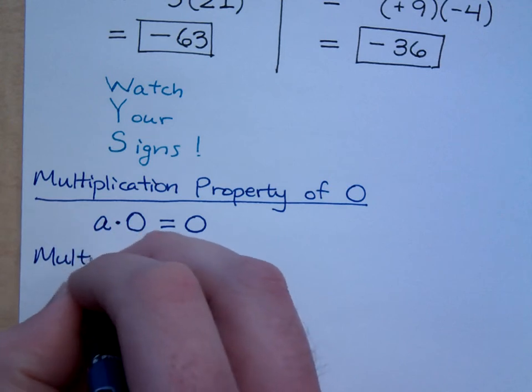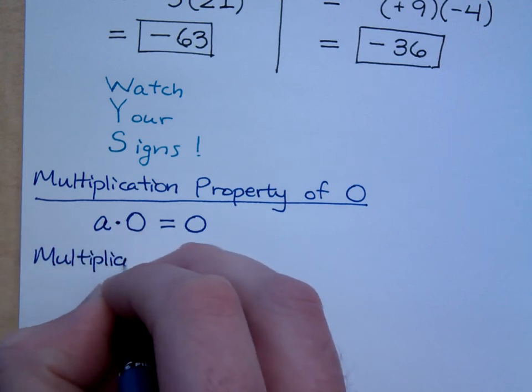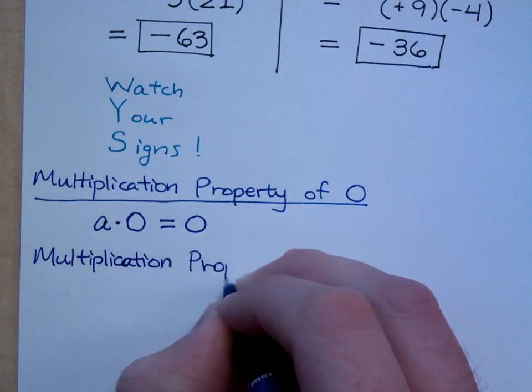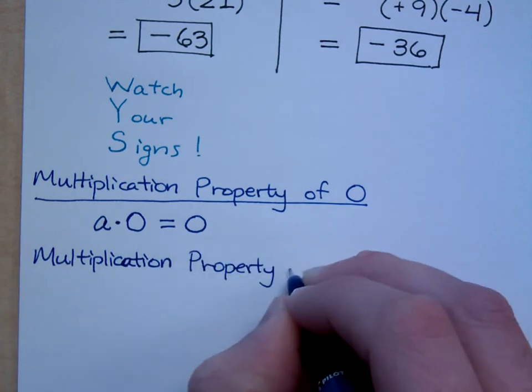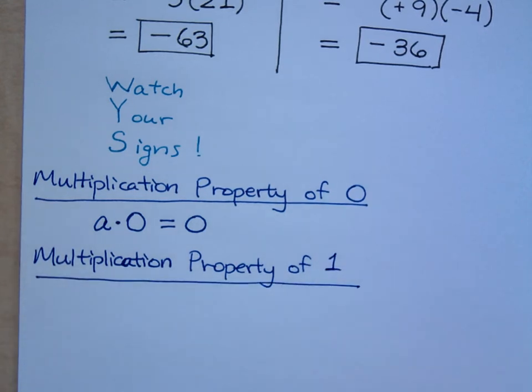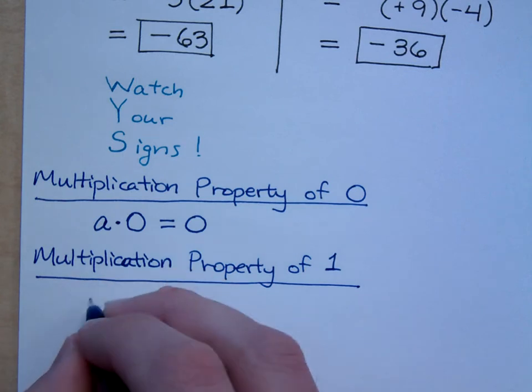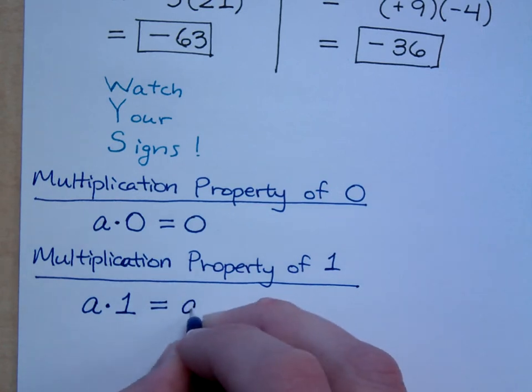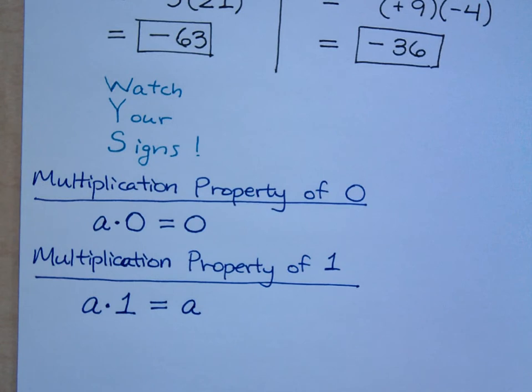Then there's this guy. And this is the multiplication property of one. The multiplication property of one says this. Any number times one equals what? It equals that number. In this case, it's represented by A. So, what I just said is that you can multiply a number times one and you still get the same number, right?